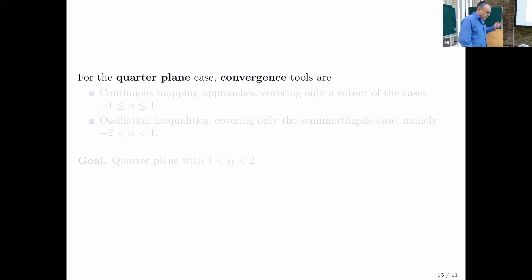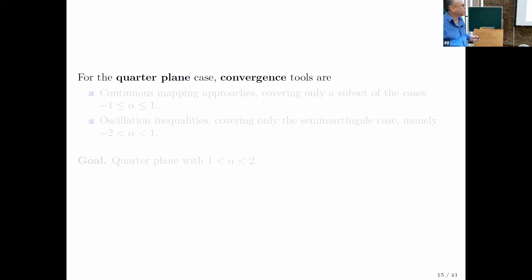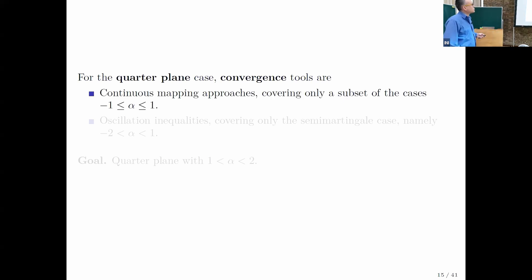A third approach via Dirichlet forms applies for reversible processes, in particular where reflection is normal. The state of the art is a paper by Bass and colleagues that studies convergence of discrete processes to RBM in a very non-smooth setting. But as I said, I'm talking today about a very simple setting — very simple geometry — just the quarter plane. So let's ask what tools we have for proving convergence in the existing literature.